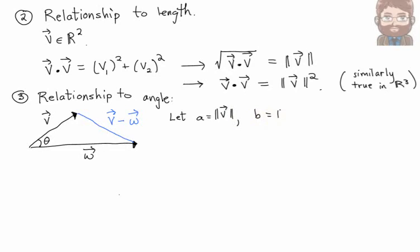To make it a little easier to write down, I'm going to say the length of the side formed by vector V, that length is A, the length of vector W is B, and the length of vector V minus W is C.